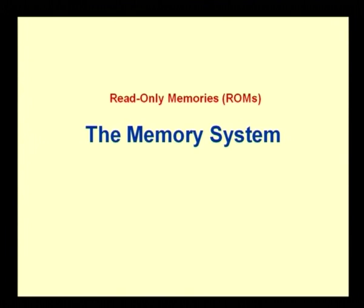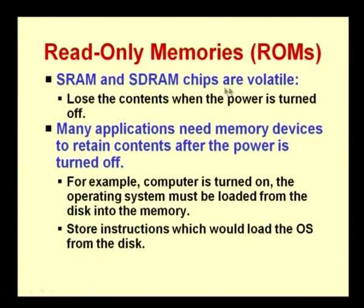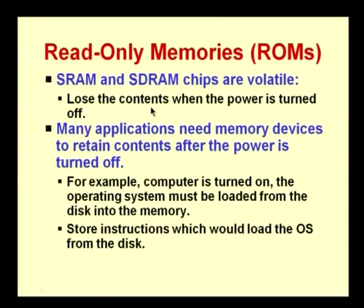We will now look at read-only memory devices. So far we looked at RAM devices. The static RAM and dynamic RAM are volatile devices — if you turn off the power they lose their contents. If you want data stored in memory even after power is turned off, we need a different kind of device — SRAMs and DRAMs will not suit that purpose. We want non-volatile devices, one example of which are read-only memories.